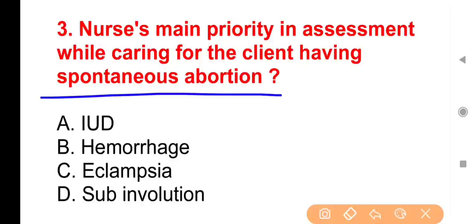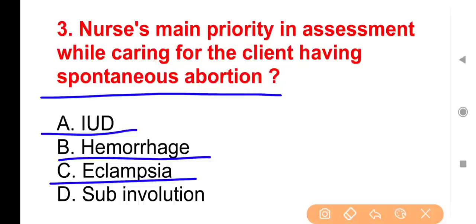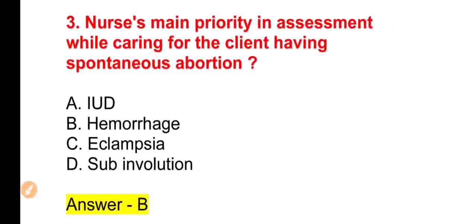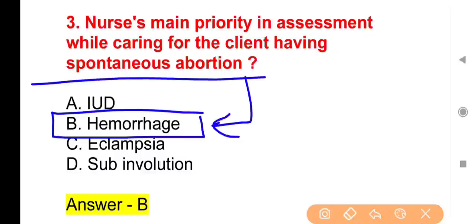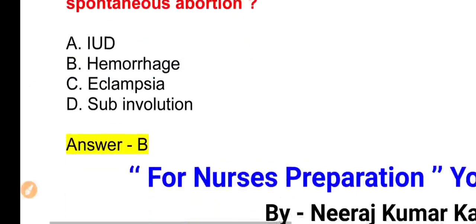A client has had a spontaneous abortion — what is the priority nursing assessment? Option A, IUD; Option B, Hemorrhage; Option C, Eclampsia; Option D, Sub-Involution. The right answer is Option B. Remember, after spontaneous abortion, assessing for hemorrhage is the priority nursing assessment.